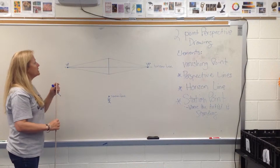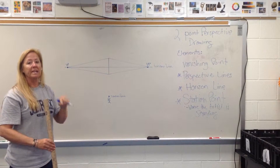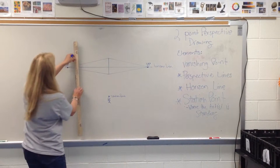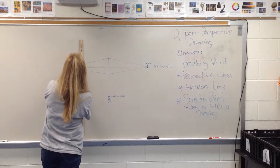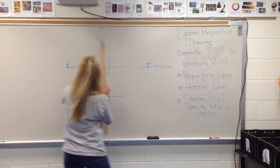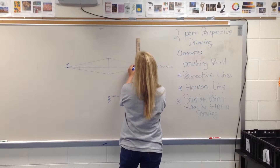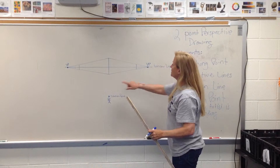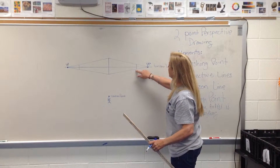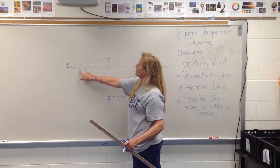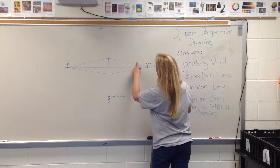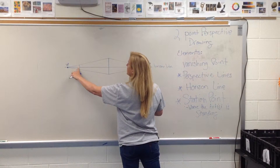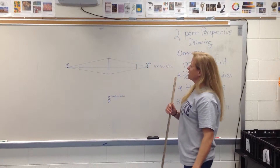This is one decision that you get to make — how long your building is going to be on each side. So go ahead and draw perpendicular lines, perpendicular to your horizon line. This is how long your building is going to be on the right side, and this is how long it's going to be on the left side. You might choose to make yours a little bit shorter — it does not matter; that's your choice.